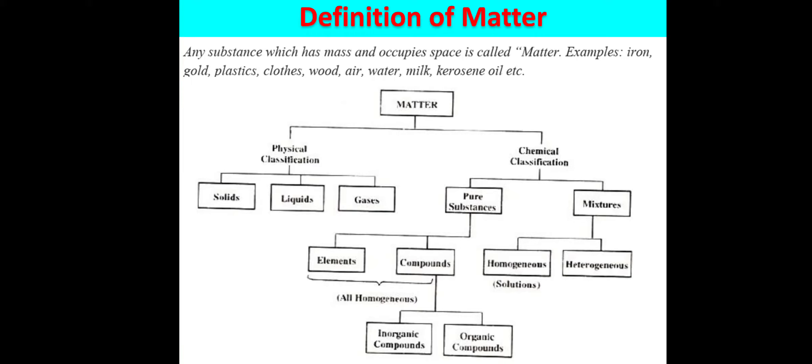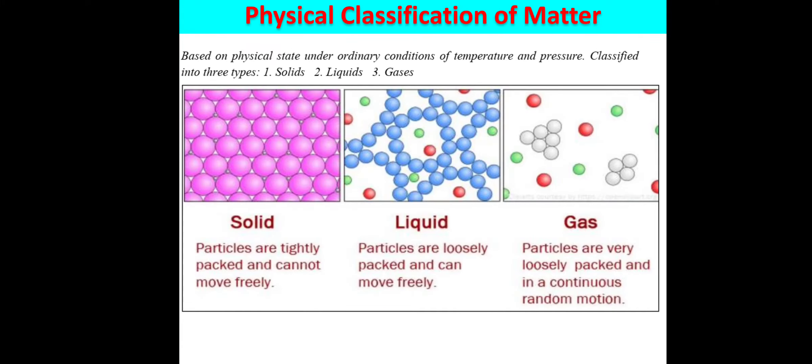Now in detail we will discuss the physical classification of matter. Physical classification is based on the physical state of matter which exists under ordinary conditions of temperature and pressure. Matter can be classified into three types: solid state, liquid state, and gaseous state.